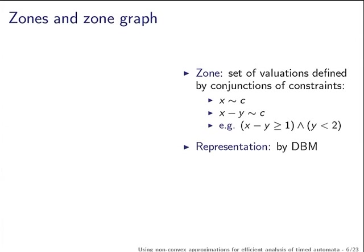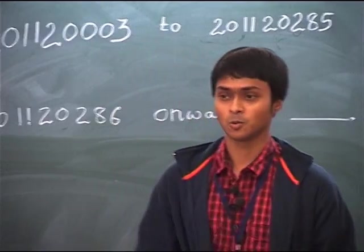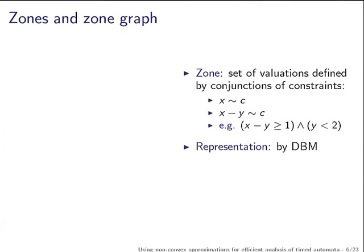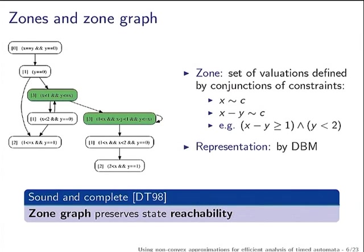A zone is a set of valuations defined by two kinds of constraints: either a clock compared to a constant, or the difference of two clocks compared to a constant. Because of this nice structure, zones can be represented by difference bound matrices (DBMs), which have efficient operations on them. Representing and working with zones is efficient. We then build the zone graph — starting, collecting all the valuations and exploring the automaton one by one. This is sound and complete with respect to reachability.